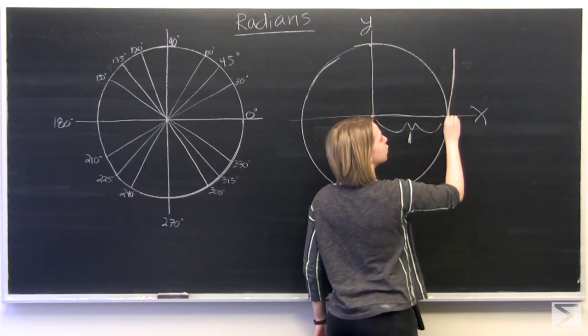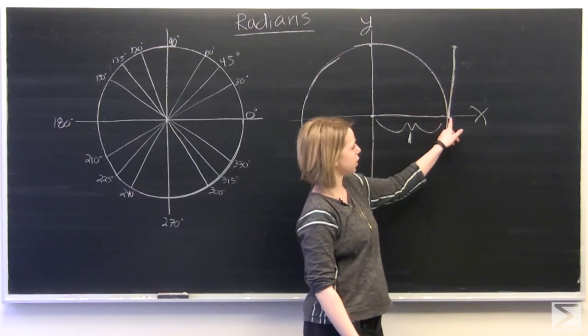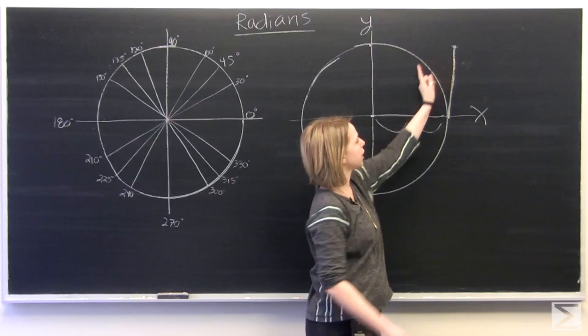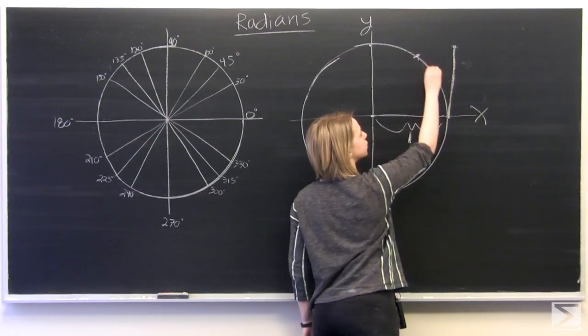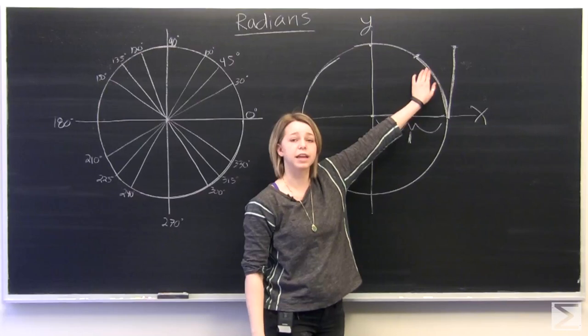This is about the same length as our radius 1 here, and we'll lay our radius down on the outside of our circle. So this is 1 radian of length along our circle.